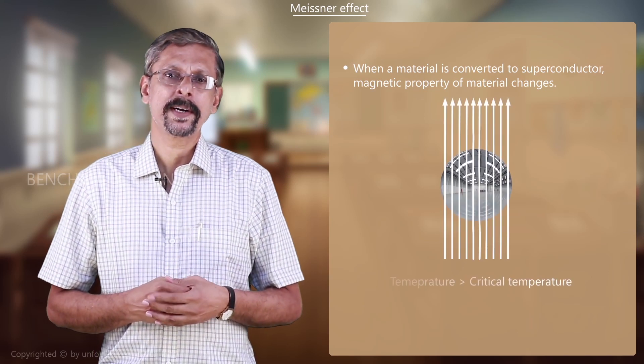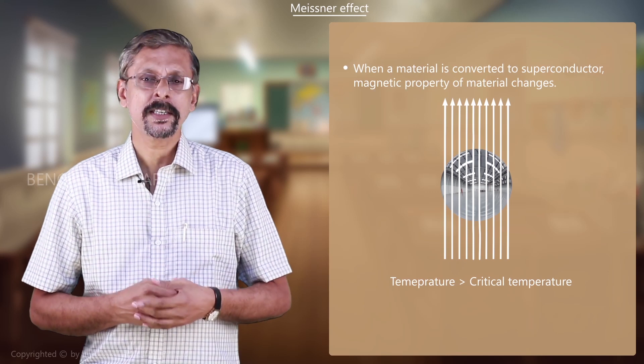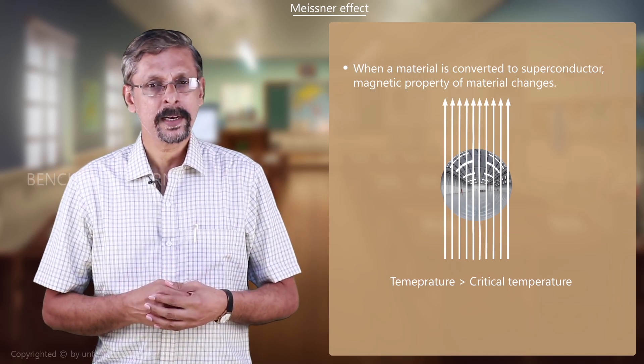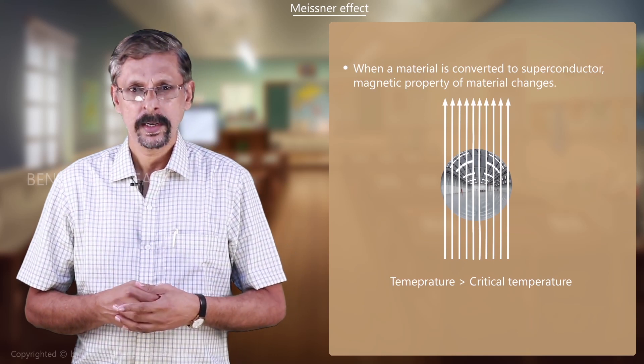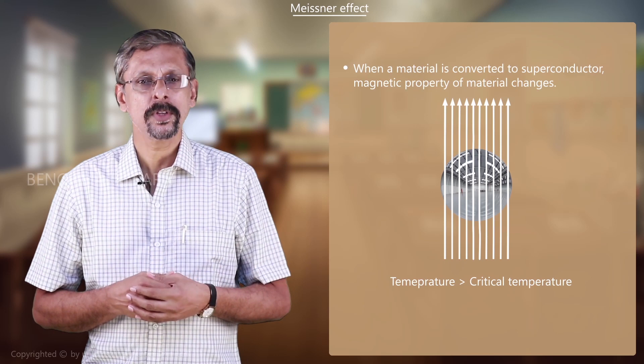Consider a superconducting material that is kept in a magnetic field at a temperature greater than the critical temperature. Now the material is not a superconductor. The magnetic flux lines will penetrate through the material.